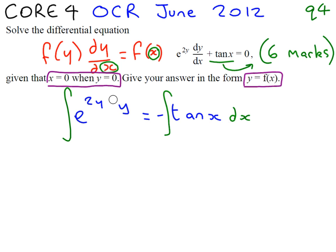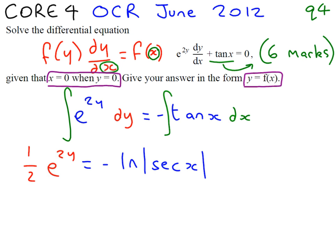We want to integrate e to the 2y with respect to y. So we get e to the 2y, and because we're reversing the chain rule, we get a half here. On the right hand side, you're probably going to want your formula book for this. The integral of tan x is ln sec x, and because it's a minus outside, it's minus ln sec x, plus c. You don't need a plus c on both sides — you can think of it as one combined constant.